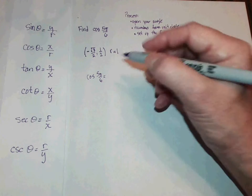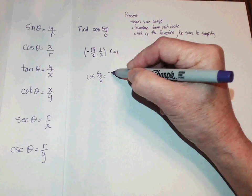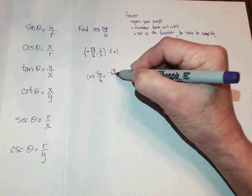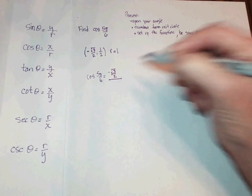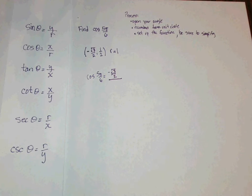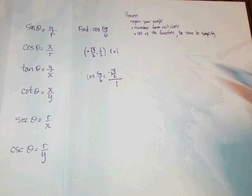I'll go into the point and put my x coordinate in the numerator. r goes in the denominator, and we're now finished setting up the function.